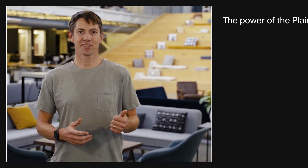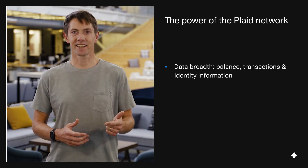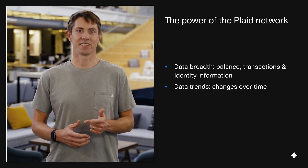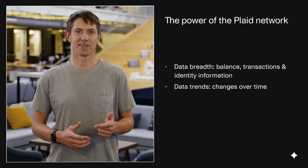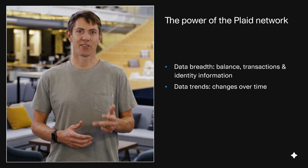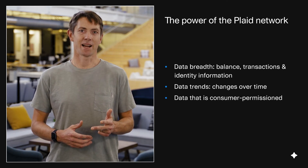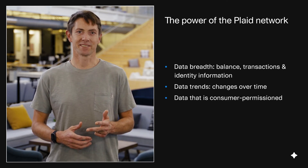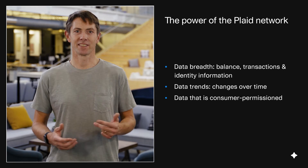So based on all these early customer conversations, a light bulb went off. We can use the power of the Plaid network to help. First, we know balance, transactions, and identity information. Second, we can see changes in these data types over time. And third, and perhaps most importantly, all of this is consumer permissioned.